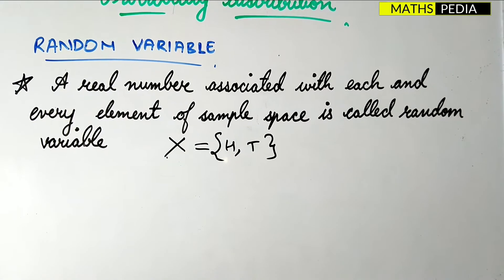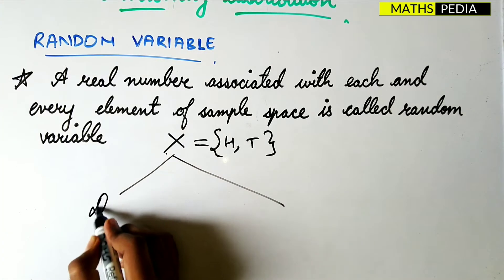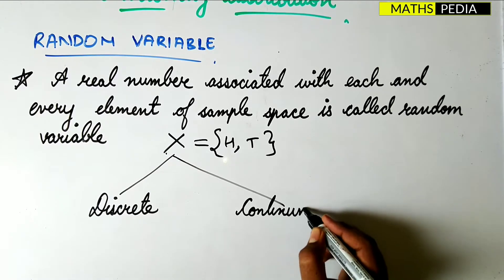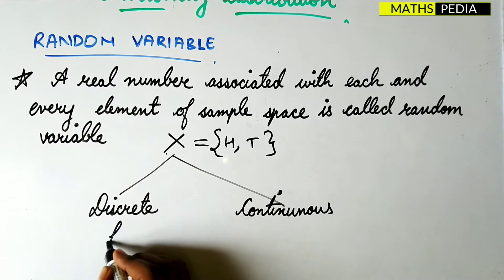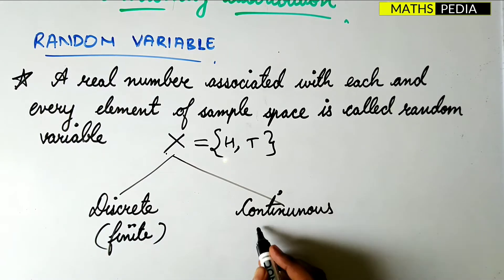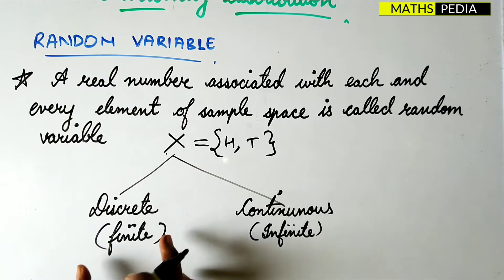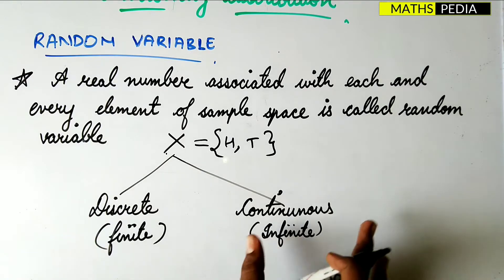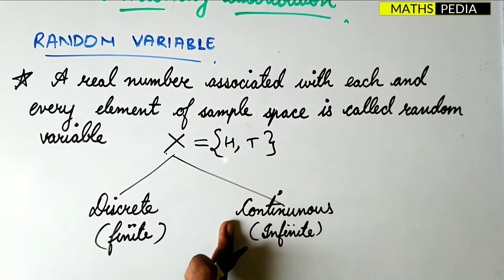We can consider two cases for the random variable: the first is discrete random variable and the next is continuous random variable. In the case of discrete, the set of random variables is finite. In the case of continuous, the set of random variables is infinite. So there are two cases for the random variable — discrete and continuous.